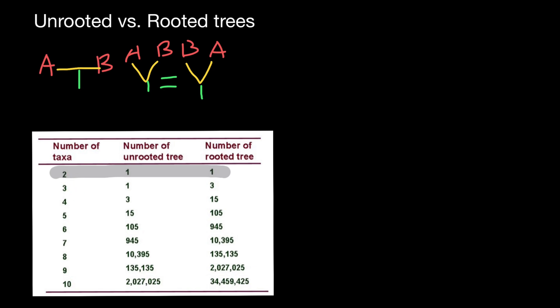Now let's talk about three taxa. The relationship is going to be as follows: taxon A, B, and C. We can connect them like this, and this is going to be an example of an unrooted phylogenetic tree. There is only one possible unrooted variant with three taxa.